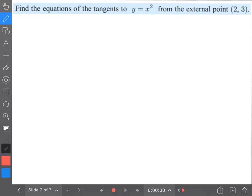We're going to find the equations of the tangents to y equals x squared from the external point 2 comma 3. What in the world does that mean? So we got y equals x squared, which you already know what that looks like. It looks something like this. And then you've got an external point 2 comma 3, which is right here.